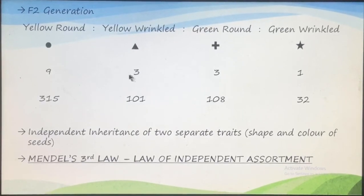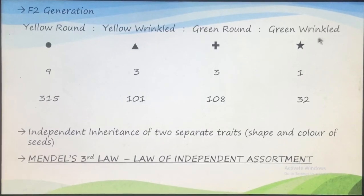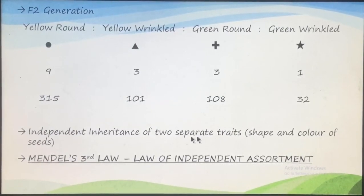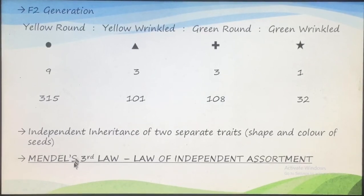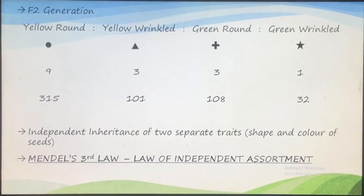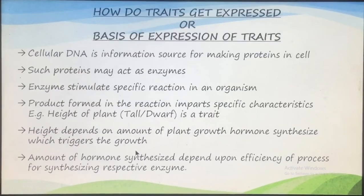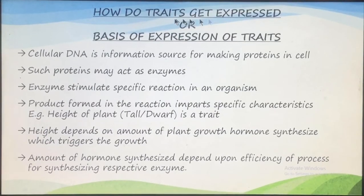This shows that two characters — yellow and round, and green and wrinkled — were not found in any parent plant. Those characters which were not present in one parent also appeared in the F2 generation, indicating independent inheritance of two separate traits. These separate traits behave independently; their inheritance is independent with no linkage. From this, Mendel postulated his third law, known as the Law of Independent Assortment, which states that the inheritance of two characters taken together is independent.